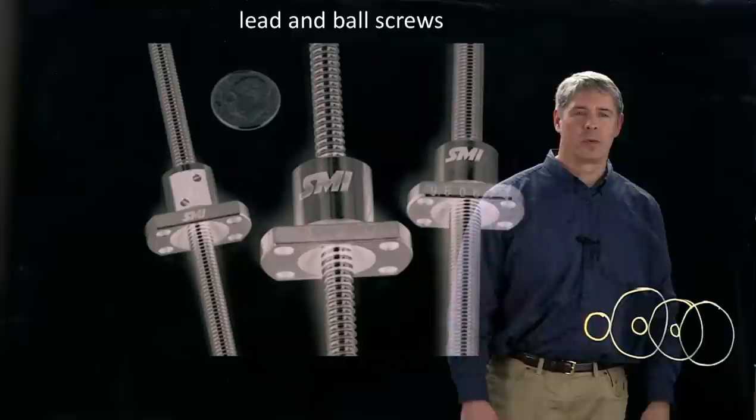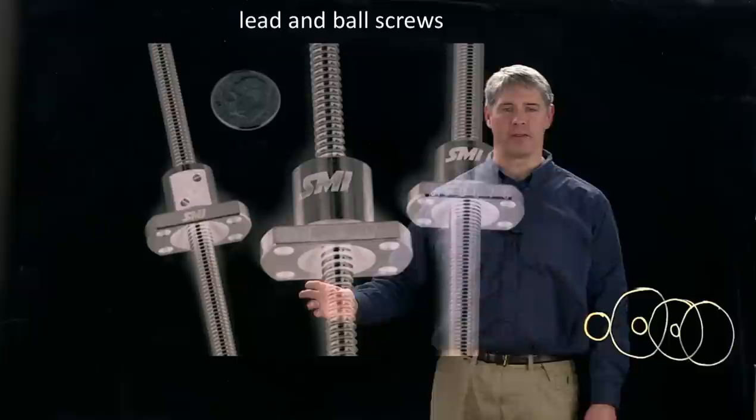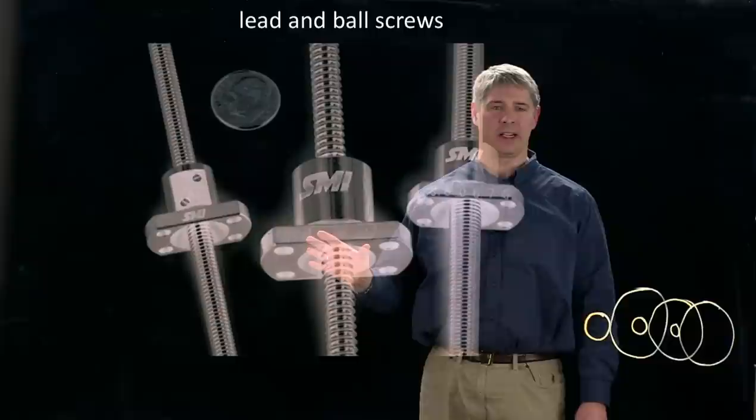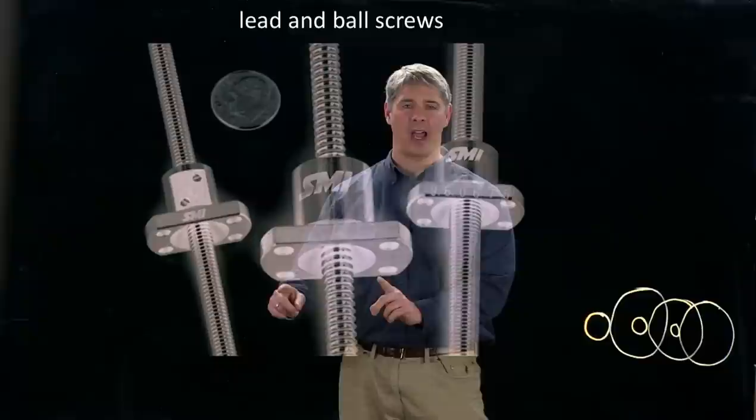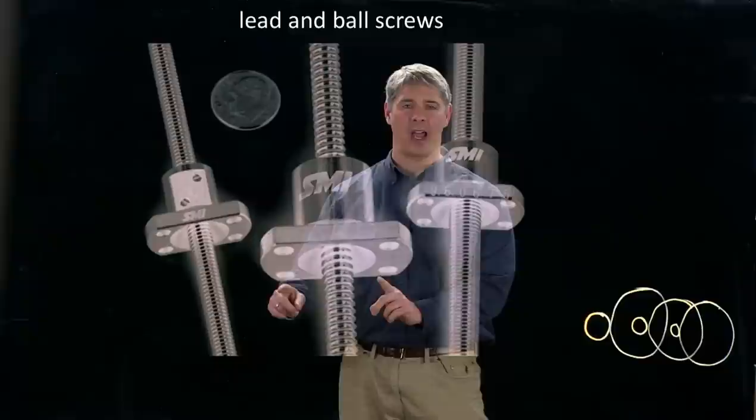We also have lead and ball screws that convert rotational motion to linear motion. So the way this works is if we have a motor down here spinning this screw essentially, then this piece sitting on it, by virtue of the fact that it's got four shafts preventing this from rotating, as the screw rotates, this has to translate back and forth.